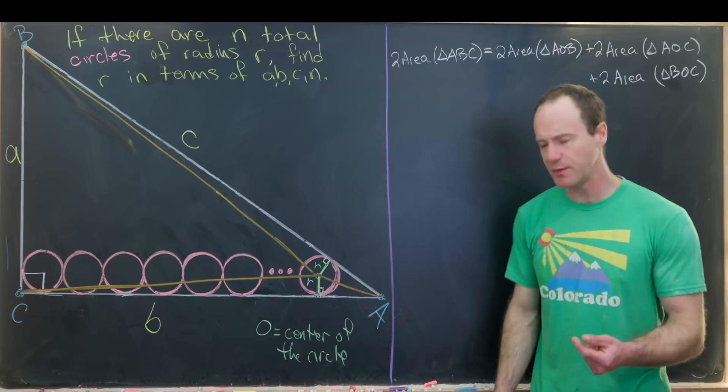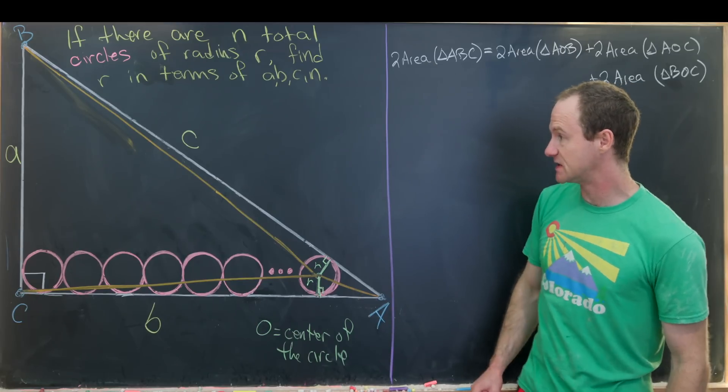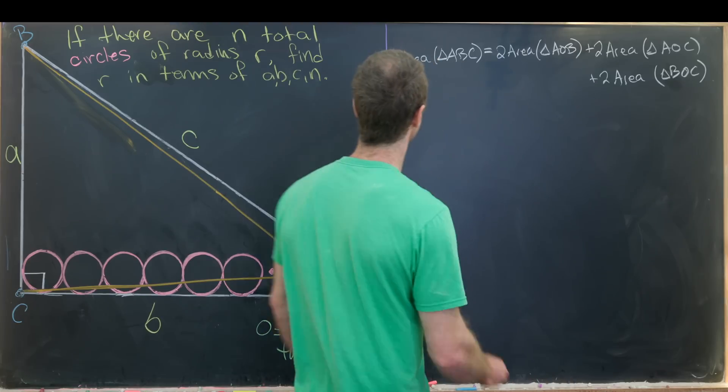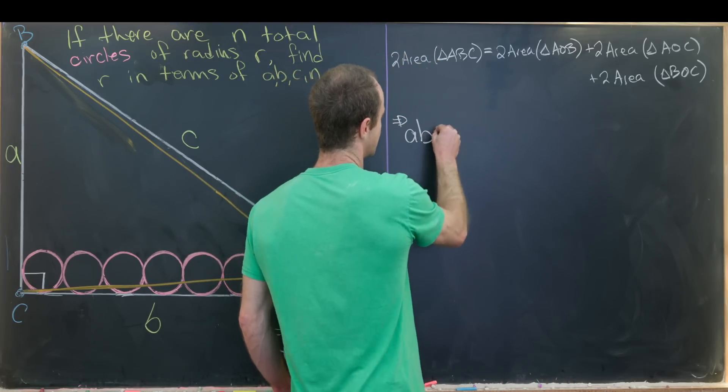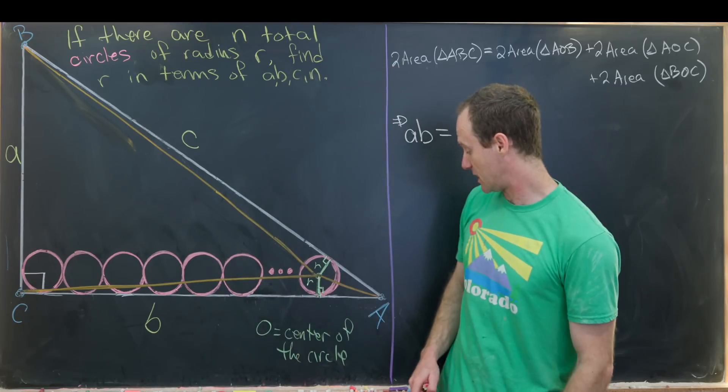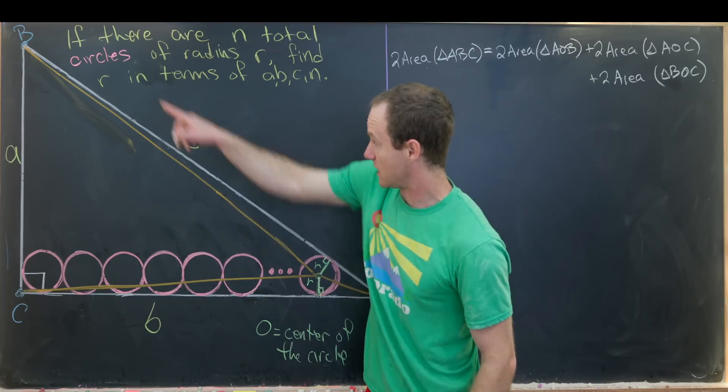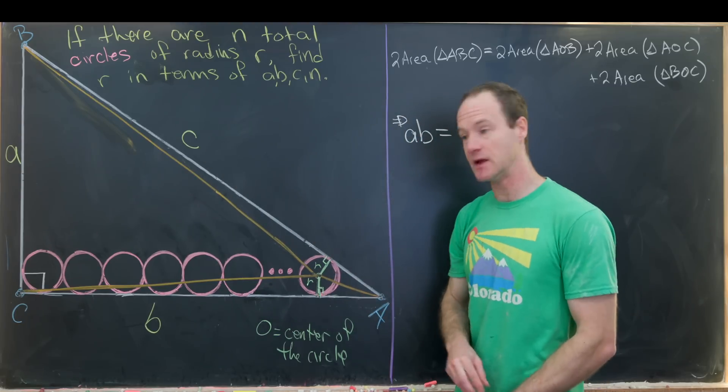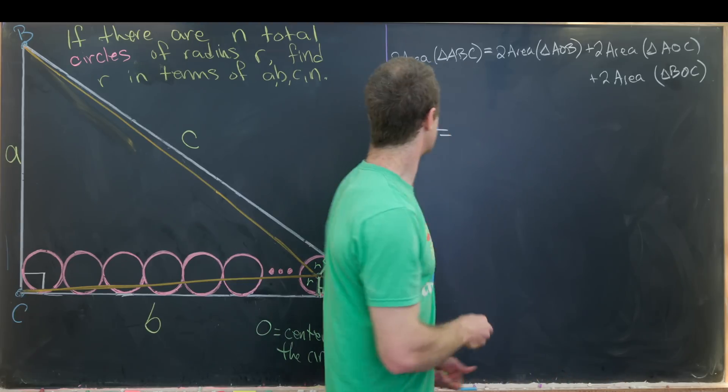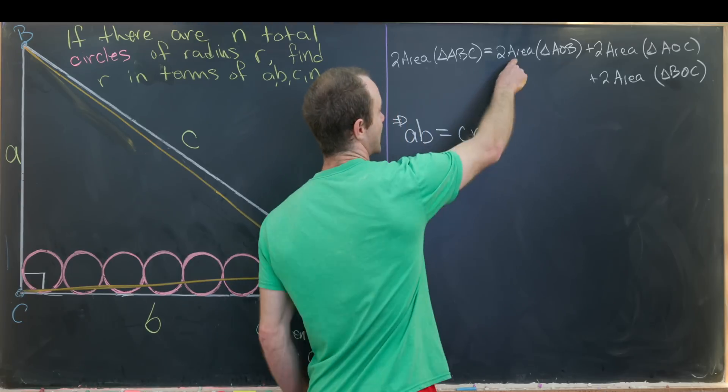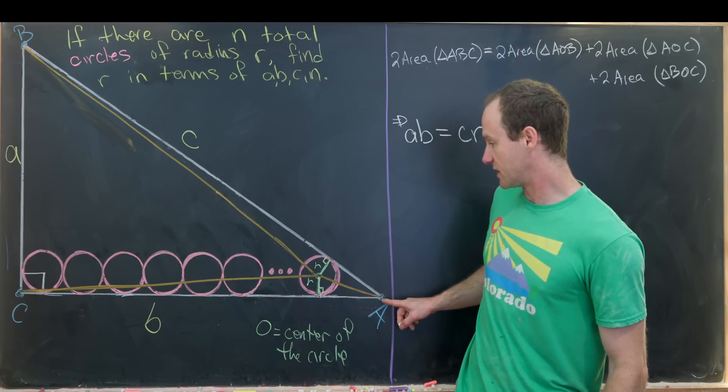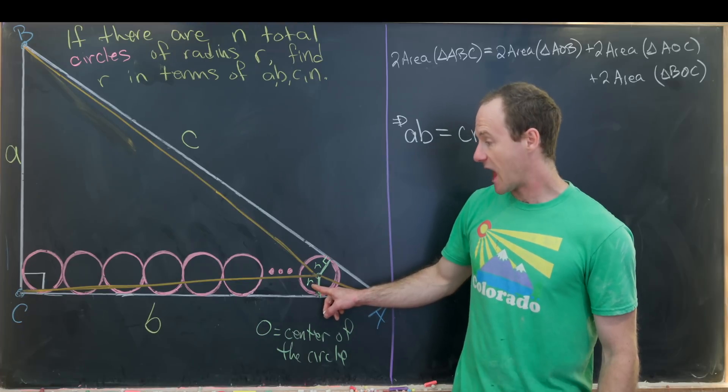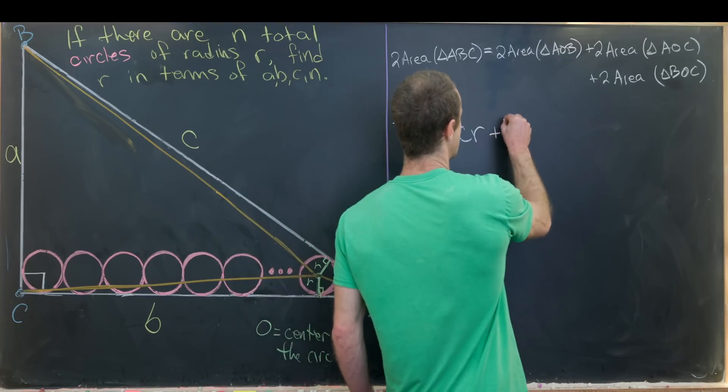Now let's measure the area of these triangles. Twice the area of ABC is just A times B because the area is base times height over two, but we cleared that denominator. For triangle AOB, the base is given by side length AB which has length C, and the height is R. So that's equal to C times R. Similarly, triangle AOC has a base of B and a height of R, so we get B times R.